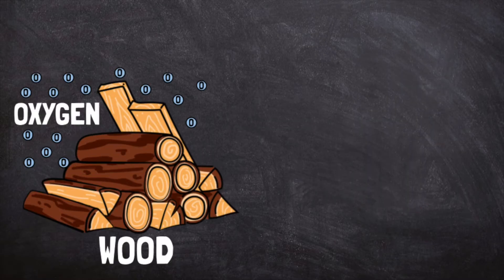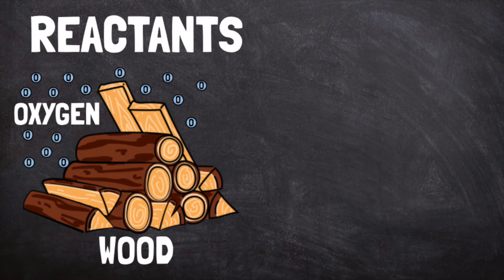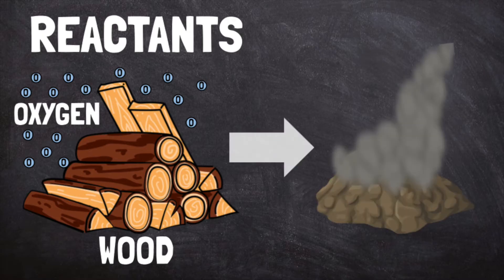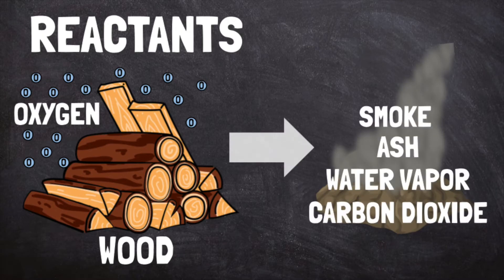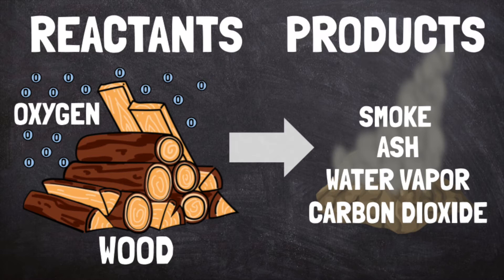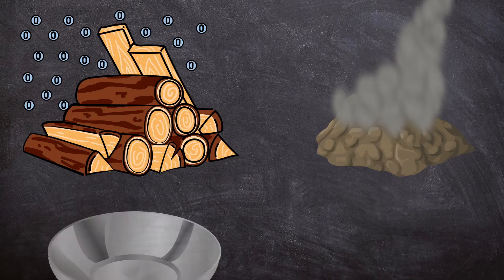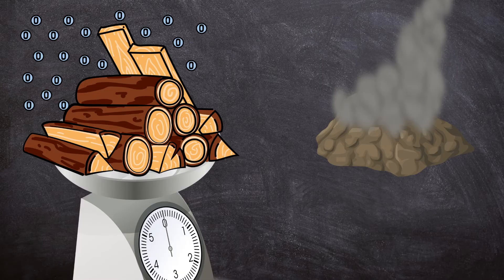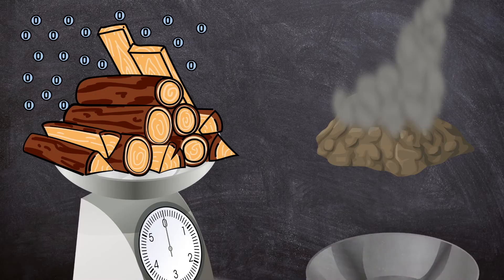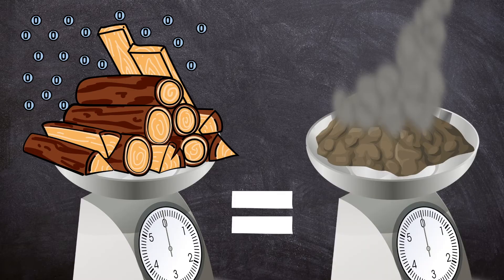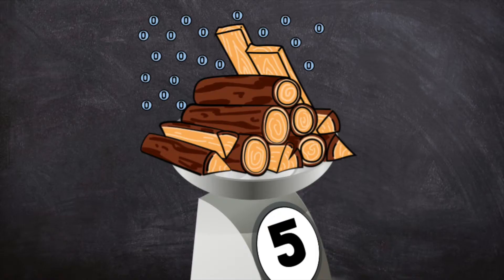In this experiment, the wood and the oxygen needed to burn it are called reactants. What's left after the fire burns — smoke, ash, water vapor, and carbon dioxide — are called products. Antoine noticed that the mass, or amount of the reactants, was always equal to the mass of the products. Mass is how much matter is in an object.